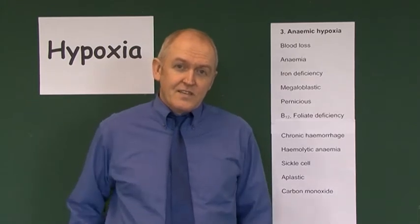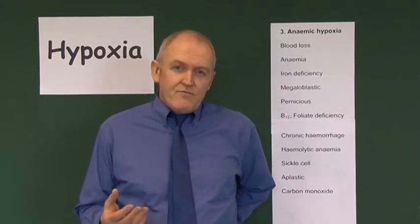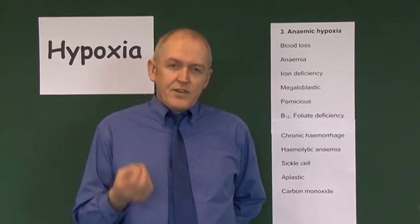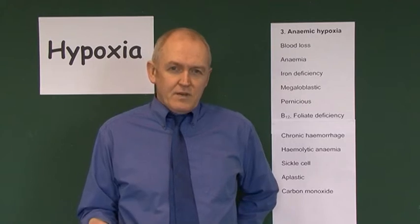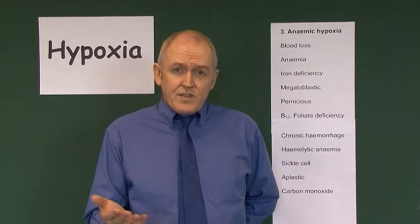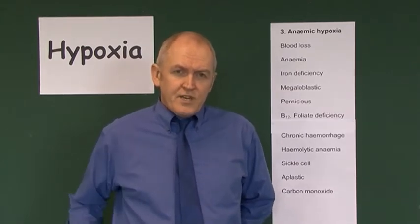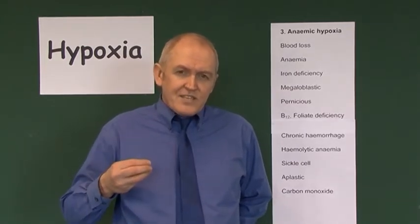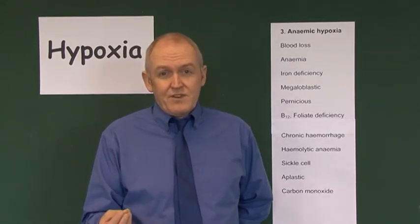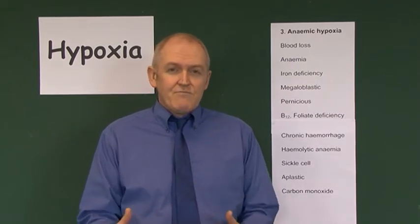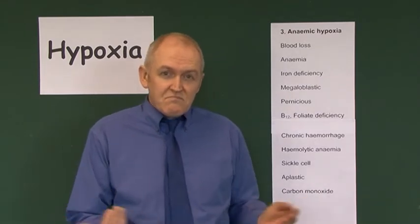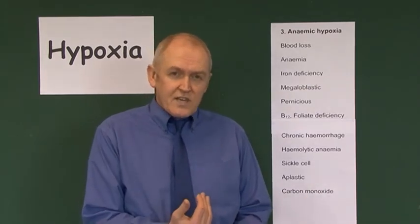Blood loss is an obvious cause of anemia. In acute hemorrhage, red blood cells are lost and there can be an acute reduced oxygen carrying capacity of the blood. Chronic hemorrhage can also lead to anemia because it is easier to replace the fluid component of the blood than to produce the red cells — it takes time to produce them. Chronic hemorrhage can be caused, for example, by tumors of the gastrointestinal tract.